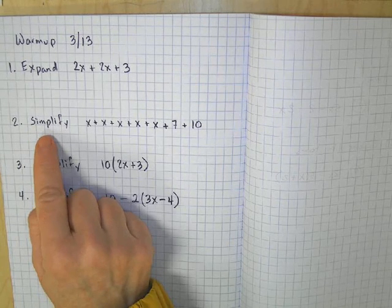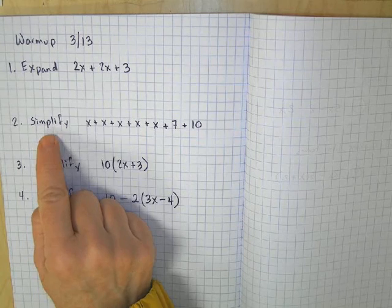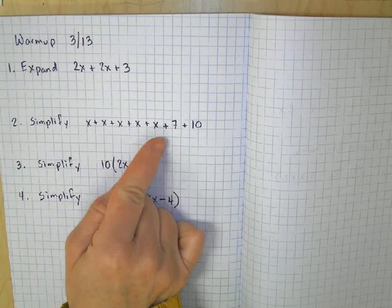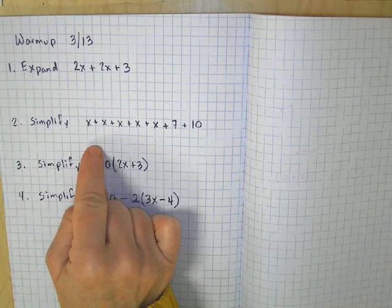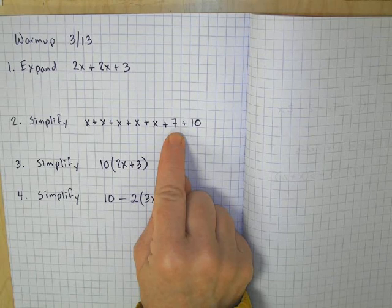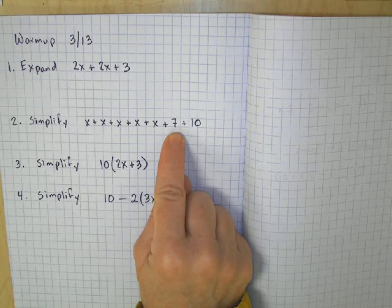The next one says simplify. This is where you need to count your x's and write all your x's as one term, and then take the other terms, these ones that are just numbers, we call them numeric terms, and add them together.